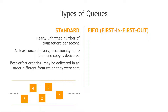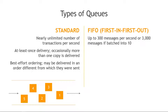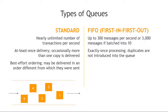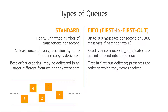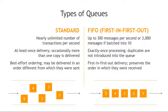The FIFO queue supports up to 300 messages per second, or up to 3,000 per second if batched in groups of ten. It uses exactly once processing, so duplicates never occur. And as the name implies, it's first in, first out — the order in which messages are received is strictly preserved.